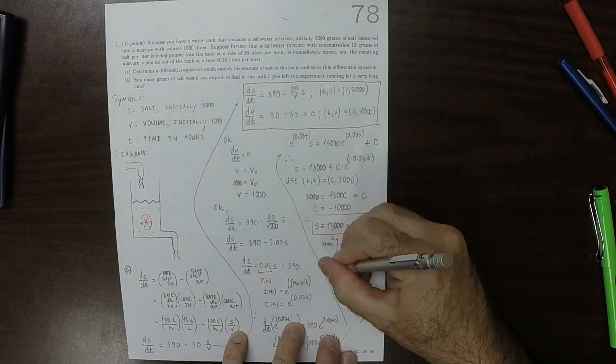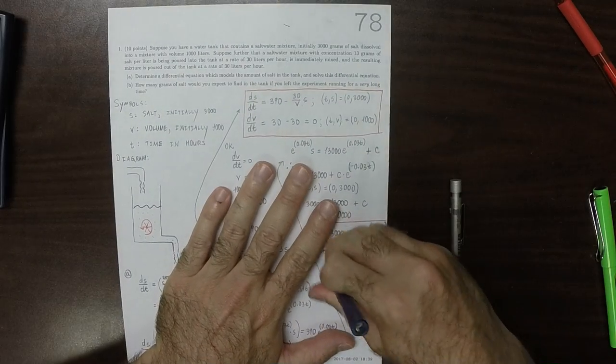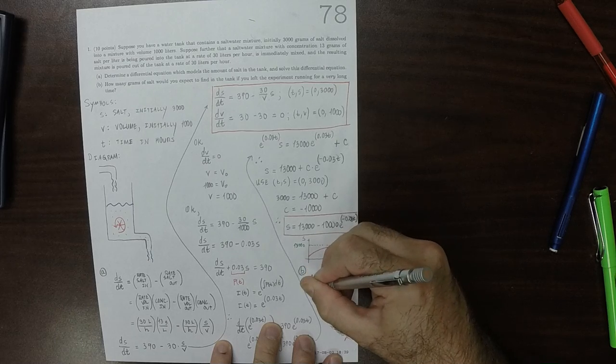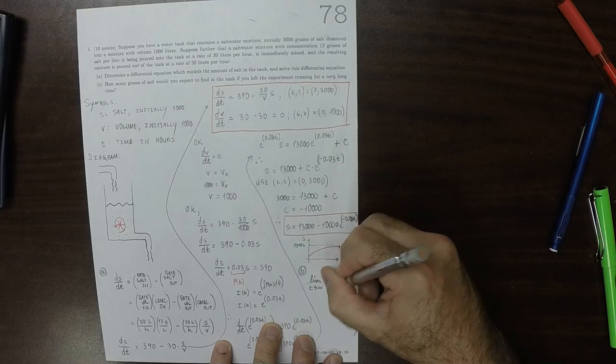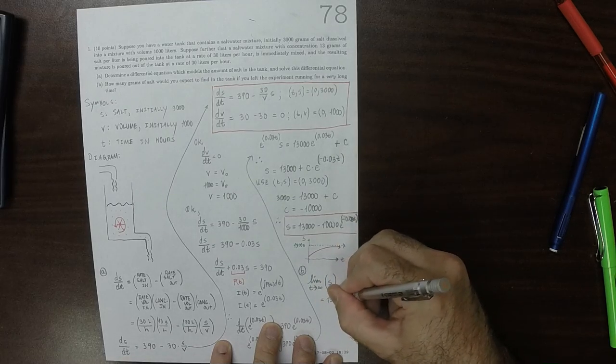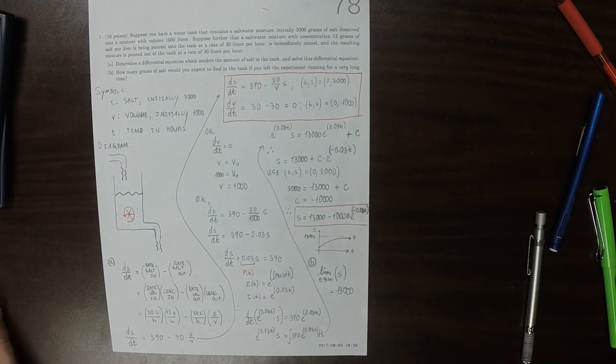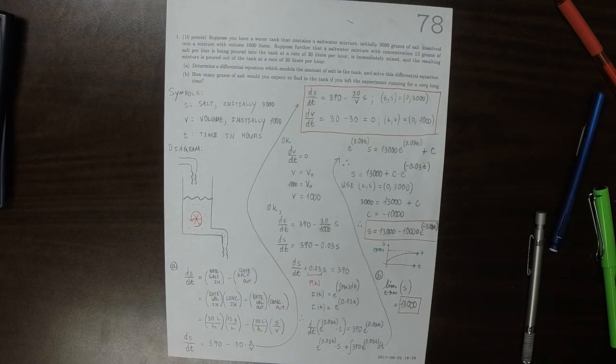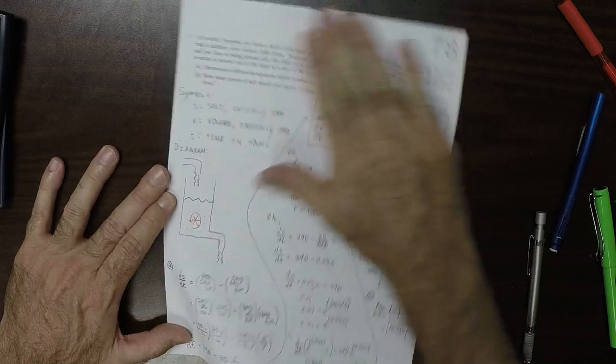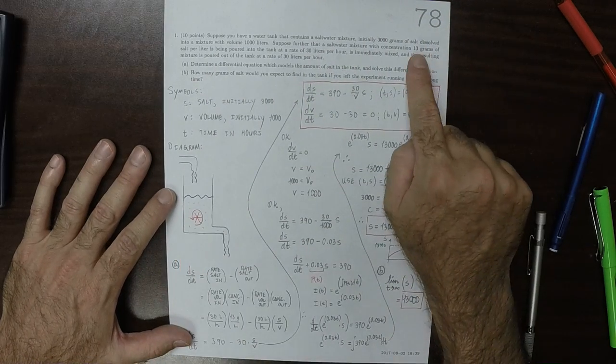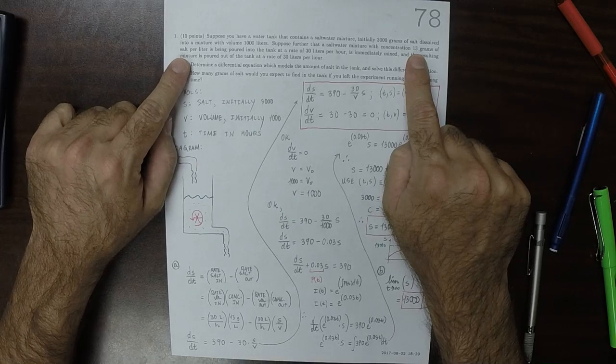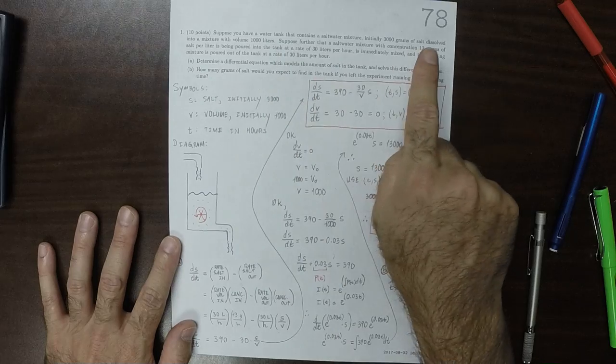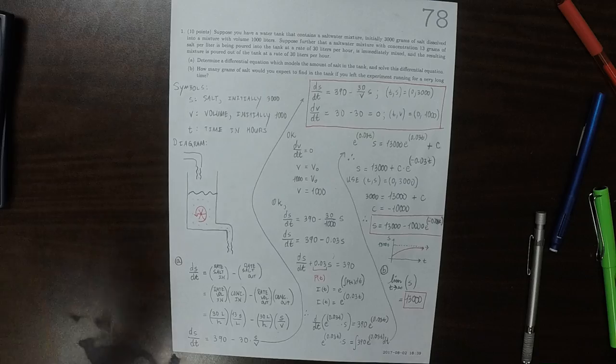Okay, and that was question B, I mean. So question B is that the limit as T goes to infinity of S is 13,000. So the reason why that makes sense is that we're talking about a tank that has a constant volume and is being pumped with 13 grams of salt per liter. So it's being poured in and then mixed and then the mixture is being poured out. And there's 1,000 liters. So if we had 1,000 liters of 13 grams per liter, that would be 13,000 grams of salt.